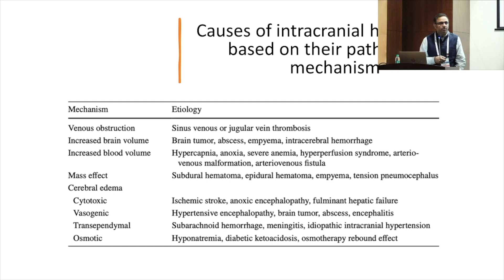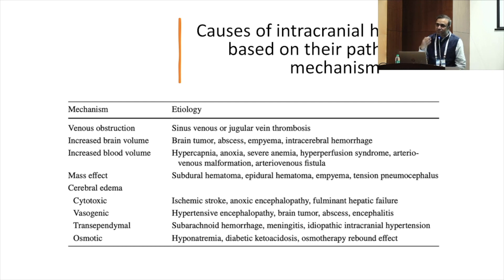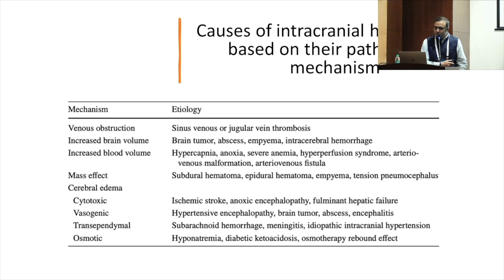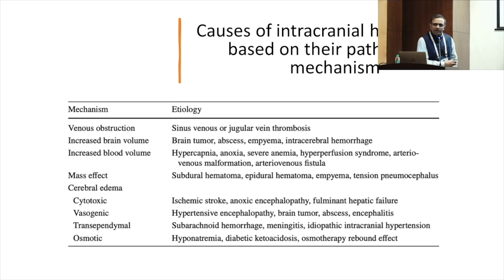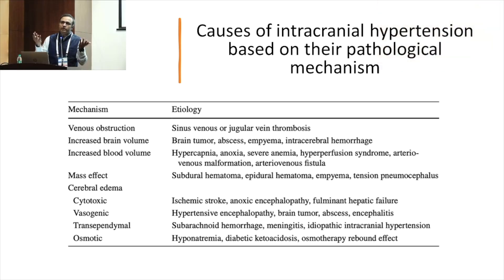The causes are multiple — right from venous obstruction, increased brain volume, increased blood volume, mass effect, and cerebral edema, which could be of different types. We predominantly talk about cytotoxic and vasogenic, but there is transependymal and osmotic as well. So the causes are multiple, and this is just a nutshell of all causes of raised ICP. We are going to talk specifically about traumatic brain injury.